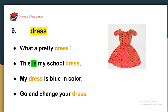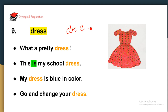The next word is 'dress.' A dress can be any clothing — a coat, pants, or something you wear. How will you learn the spelling of dress? D-R, then E-S-S. There is a hissing sound, so double S. D-R-E-S-S — dress.